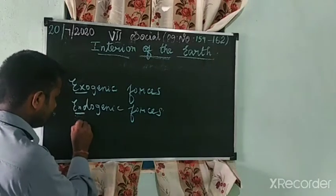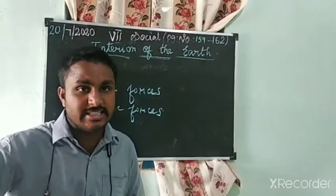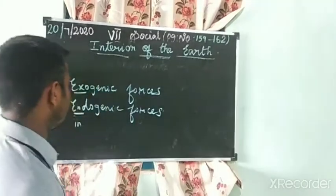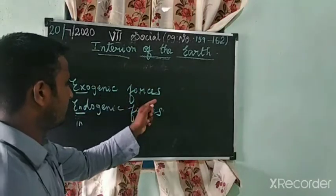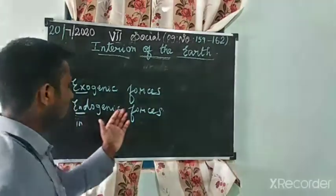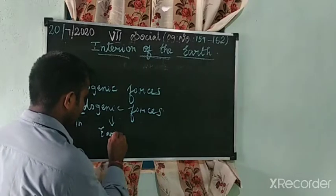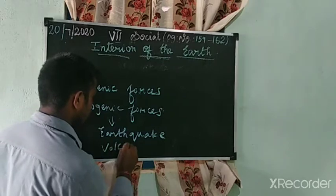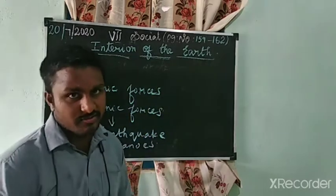'Endo' means hidden. Changes that happen in the interior of the earth are called endogenic forces. So, changes on the surface of the earth are called exogenic forces, and changes in the interior of the earth are called endogenic forces. Earthquakes and volcanoes are examples of endogenic forces.